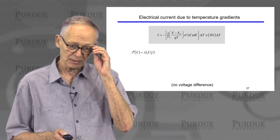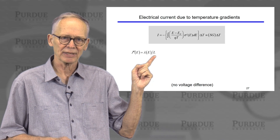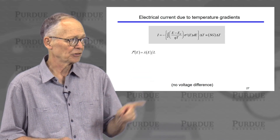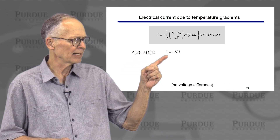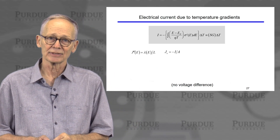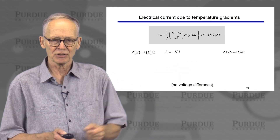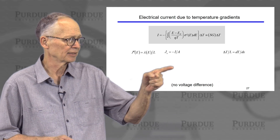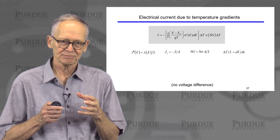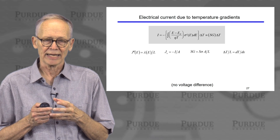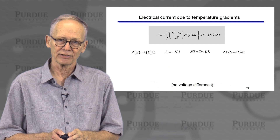Now let's look at a large bulk sample. I'm going to assume that I have a very long sample — many mean free paths long — so the transmission is very small; it's just the ratio of the mean free path divided by the length. I'm going to define current flow to be positive when it flows in the positive x direction. The difference in temperature over a length L is a gradient in the temperature, and we convert these quantities from a conductance to a conductivity by multiplying by cross-sectional area divided by length.